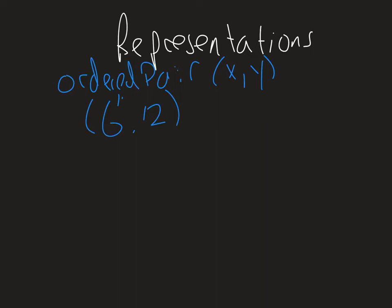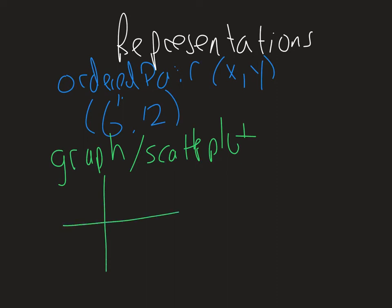Pairing off of the ordered pair, we can do a graph or a scatter plot. So taking your ordered pairs, and you can plot the points using the coordinates.